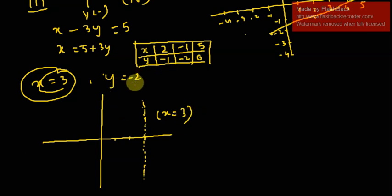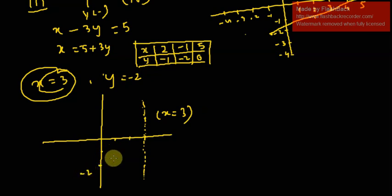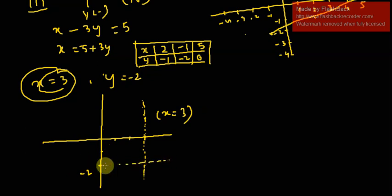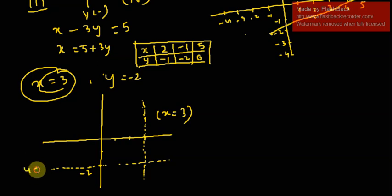To draw y equals minus 2: on the y-axis, locate minus 2. We don't know the value of x — it can be positive or negative — so the line parallel to the x-axis passing through y equals minus 2 is the representation of y equals minus 2.